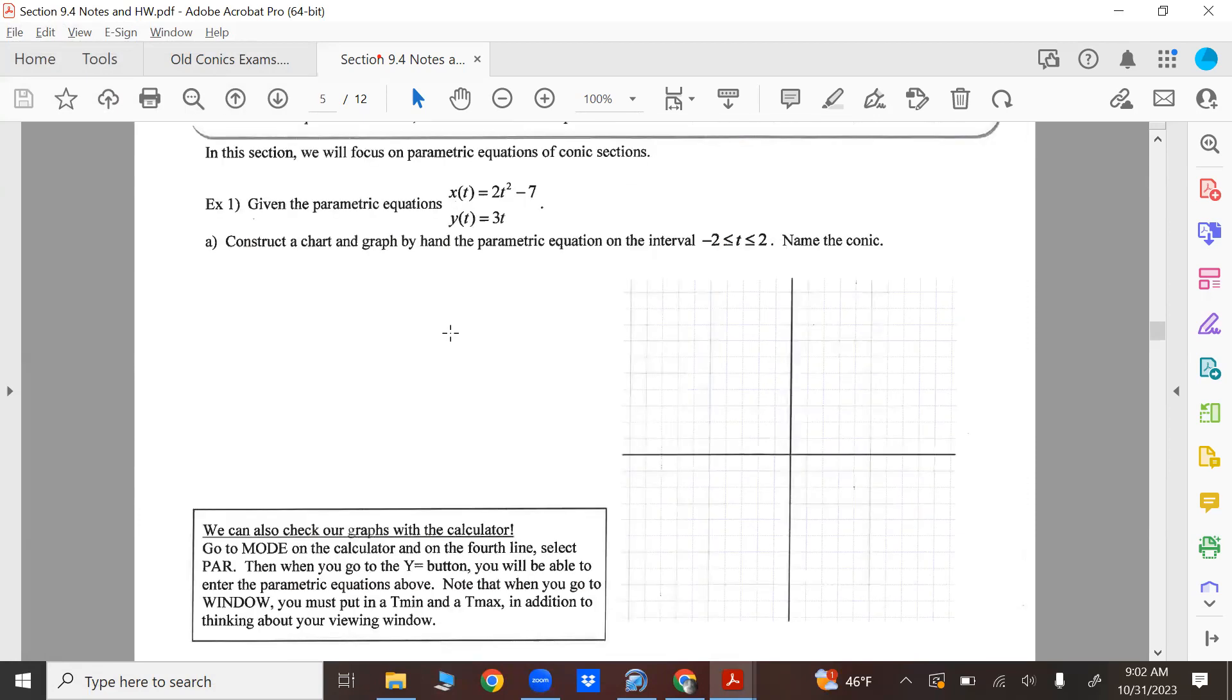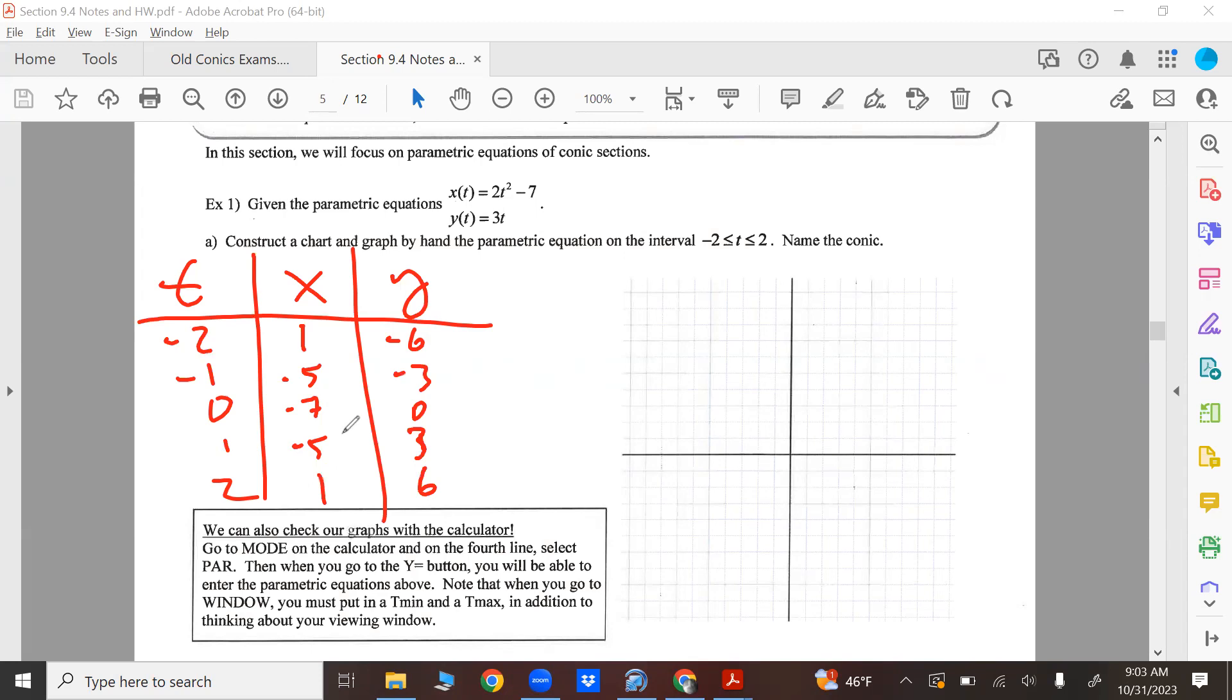So let's make a table. So you got T, X, and Y, negative two, negative one, zero, one, and two. Make it simple, right? Let's solve for X. Well, actually, I'll do Y. Y is easier. That's going to be negative six, negative three, zero, three and six. Let's plug in negative two. I get one, negative five. Is that right? Negative seven, negative five, and one. But this is what you're plotting. You're plotting that, the last two columns. So one, negative six.